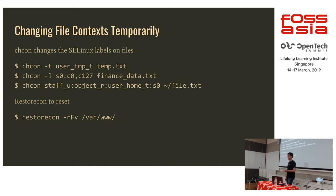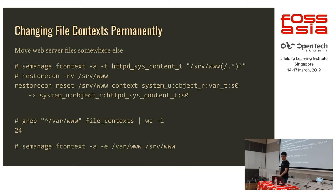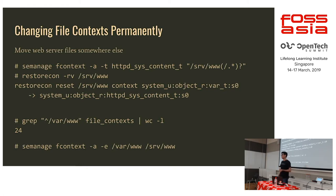To change contexts temporarily, use chcon — like chown or chgrp but for SELinux context. chcon -t sets the type, -l sets the level; you can also give the full context string or use --reference to copy the type from another file. Then restorecon to set everything back. To make changes permanent, use semanage fcontext — give it a type and a directory regex (it's a real regex, so you can match subdirectories or specific patterns). For example if you moved Apache from /var/www to /srv, you can set the type on /srv.